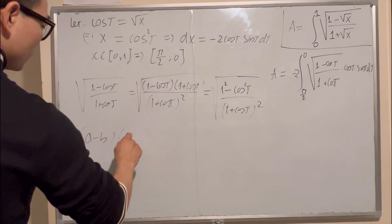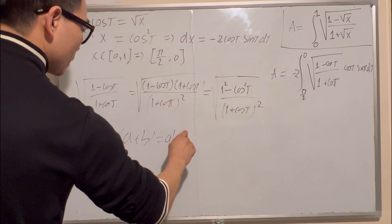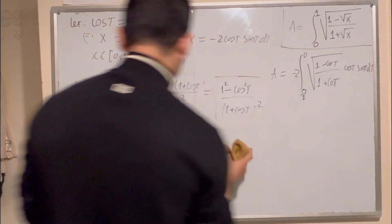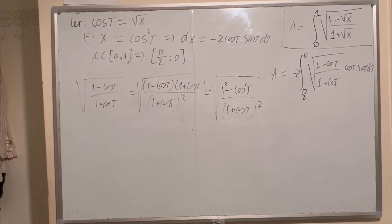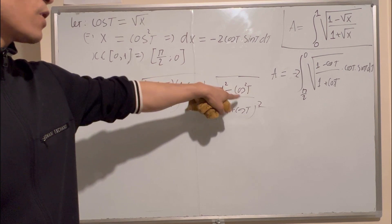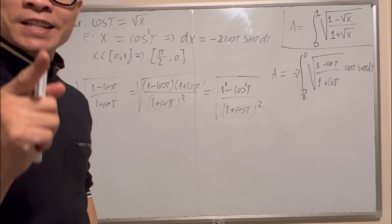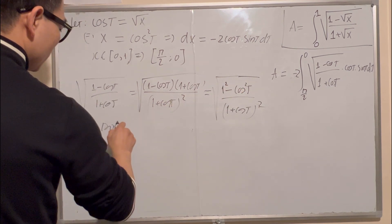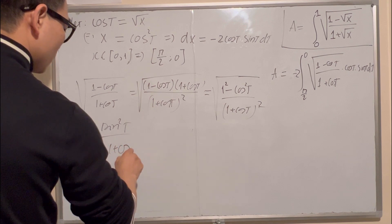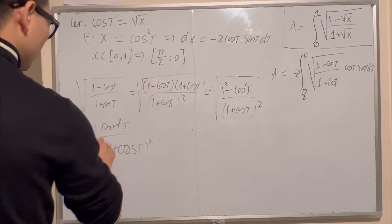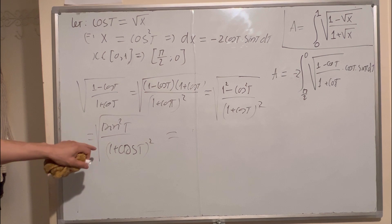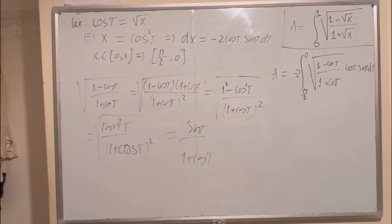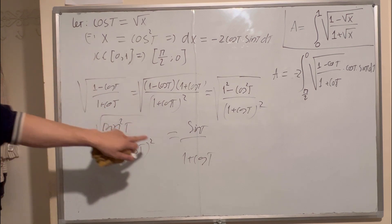Because (a − b)(a + b) equals a² − b², that is the formula. So 1 − cos²t equals sin²t on the numerator. So you have sin²t over (1 + cos t) inside the square root. Now you can read off the square root, giving sin t over (1 + cos t)^(1/2). Now substitute that inside the integration.